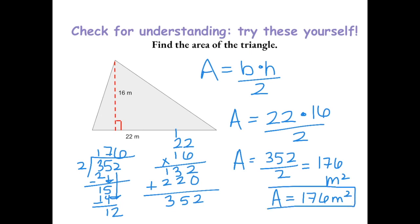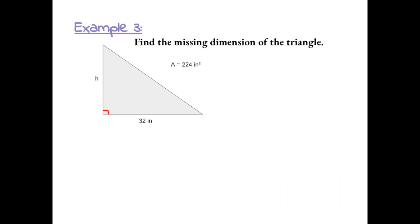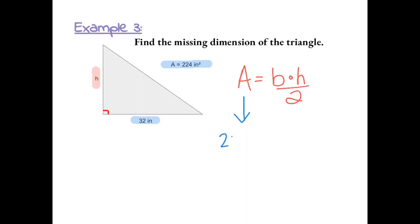Find the missing dimension of the triangle. In this problem, we're given the area and we're given the base, but we're missing the height. Let's set up our formula: area equals base times height divided by 2. We know the area is 224 inches squared, equal to the base of 32 times h divided by 2.